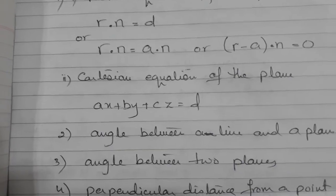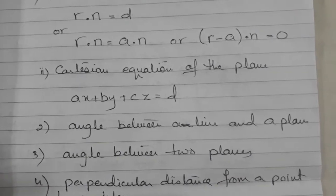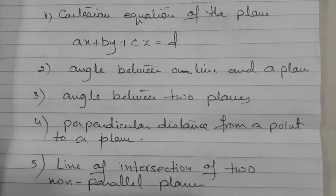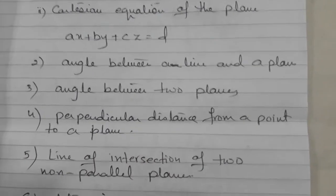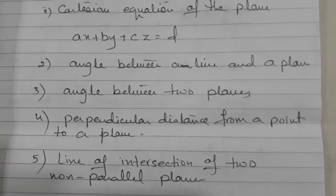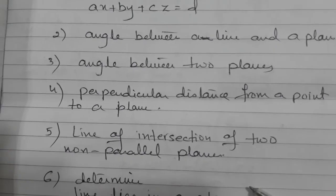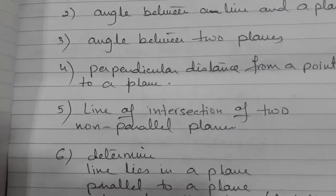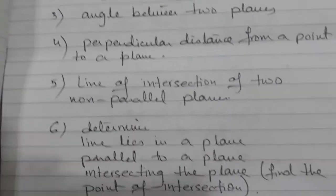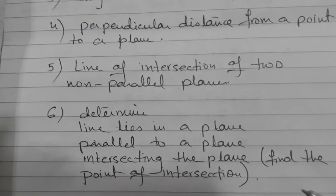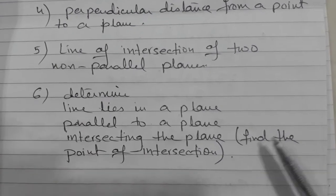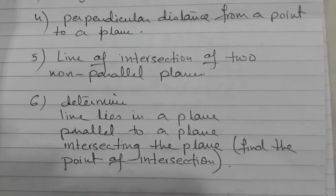Then we need to study the angle between a line and a plane, or angle between two planes. Perpendicular distance from a point to a plane. Line of intersection when two planes are non-parallel. And determine where the line lies in a plane, parallel to a plane, intersecting the plane and then we have to find the point of intersection as well.